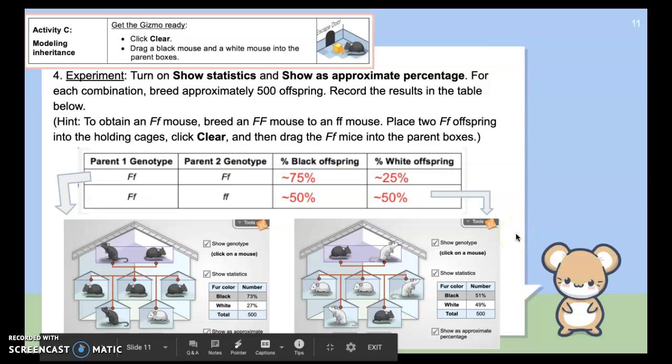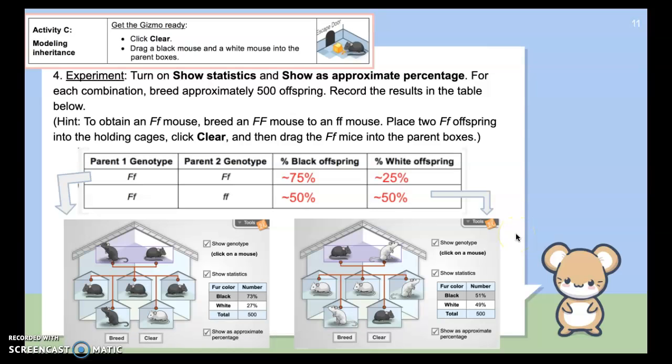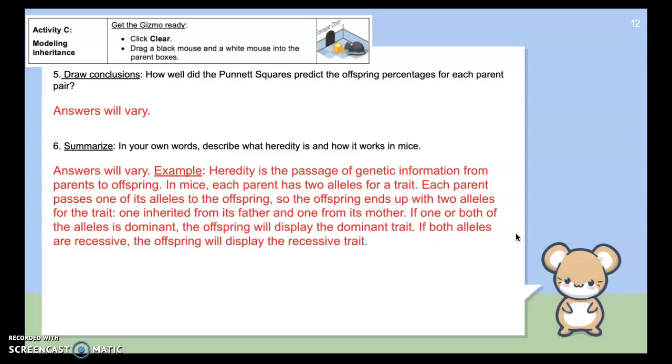What this goes to show you is that all of those experiments that Mendel did, he was using this method to predict the outcome. And for the most part, he saw that in his experiments in his garden. And so, in terms of drawing conclusions, how well did this Punnett squares predict the offspring percentages? They're very, very close to one another. So how could we summarize this? The Punnett squares that we use and we have been using in class are used to predict what will happen and show the probability or likelihood of something occurring. It doesn't always mean that that's what's going to result, but the chances are pretty good.